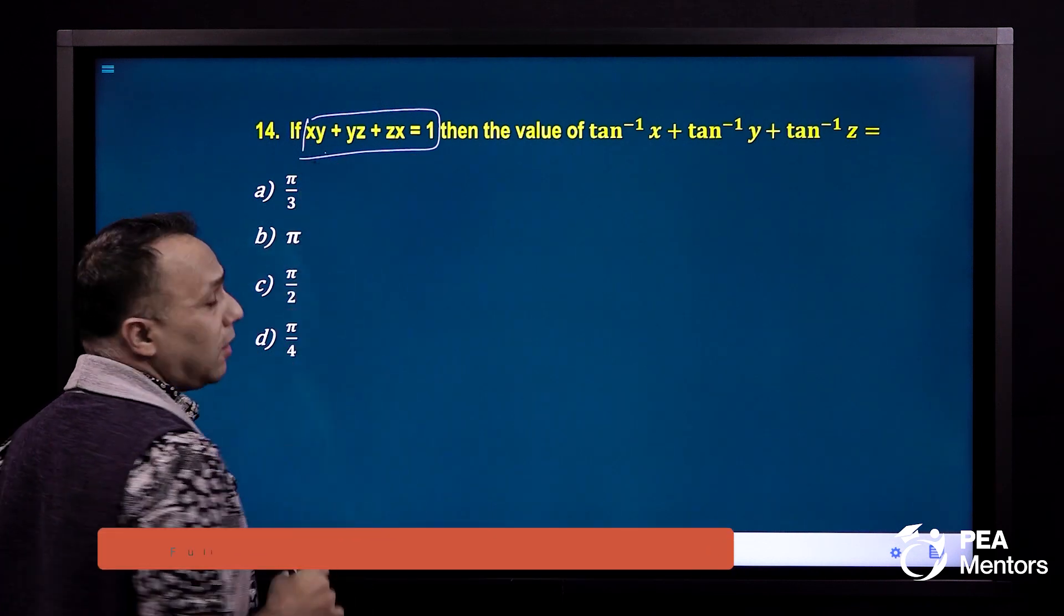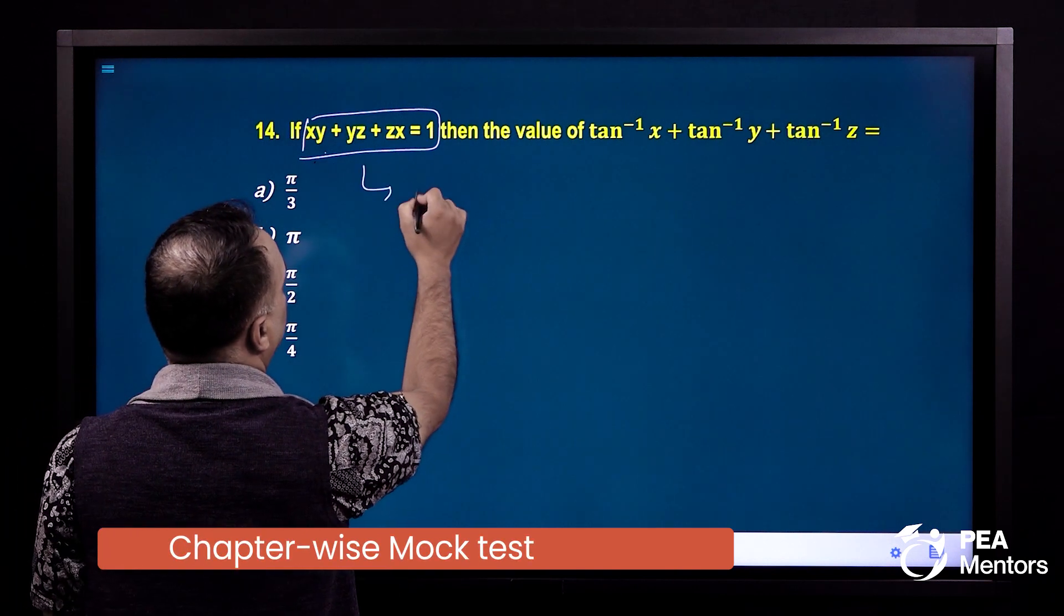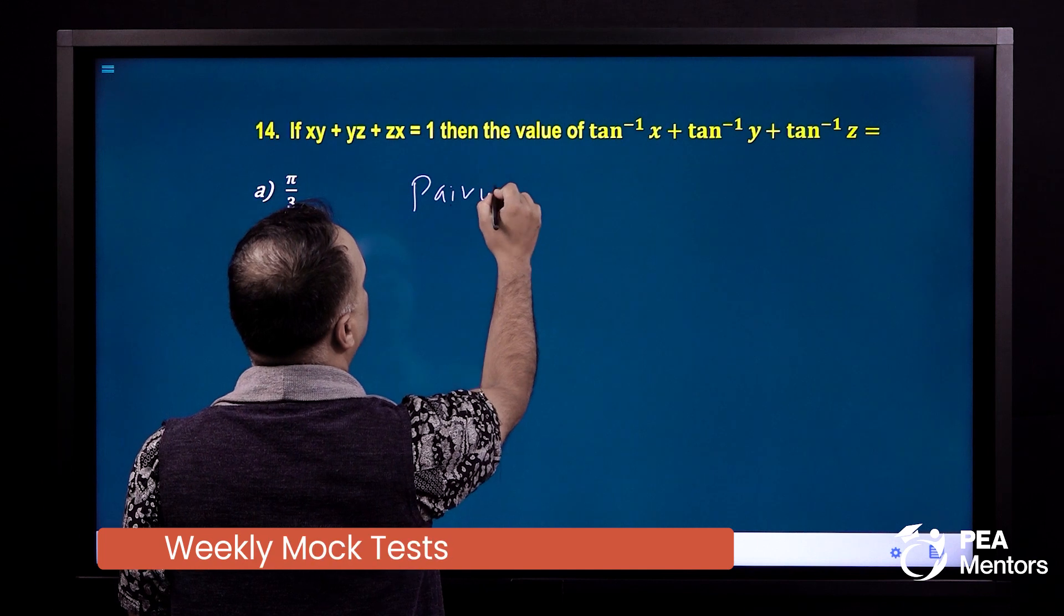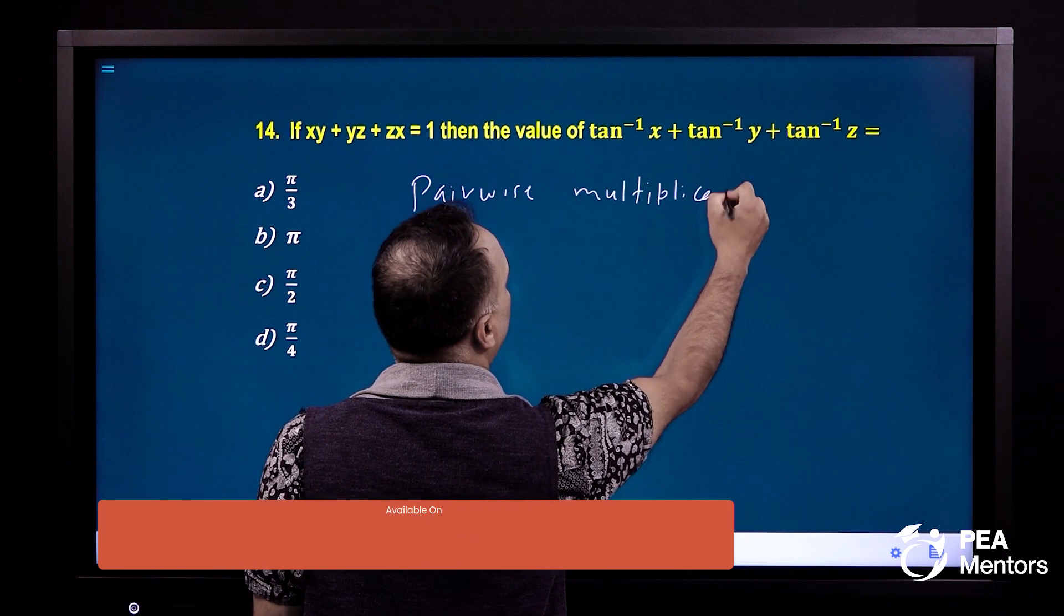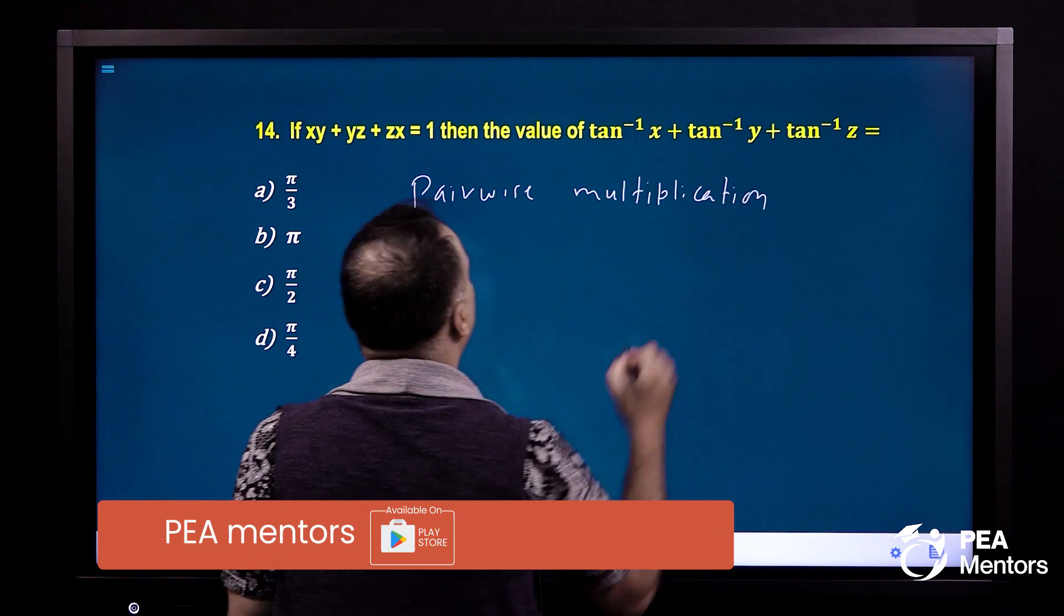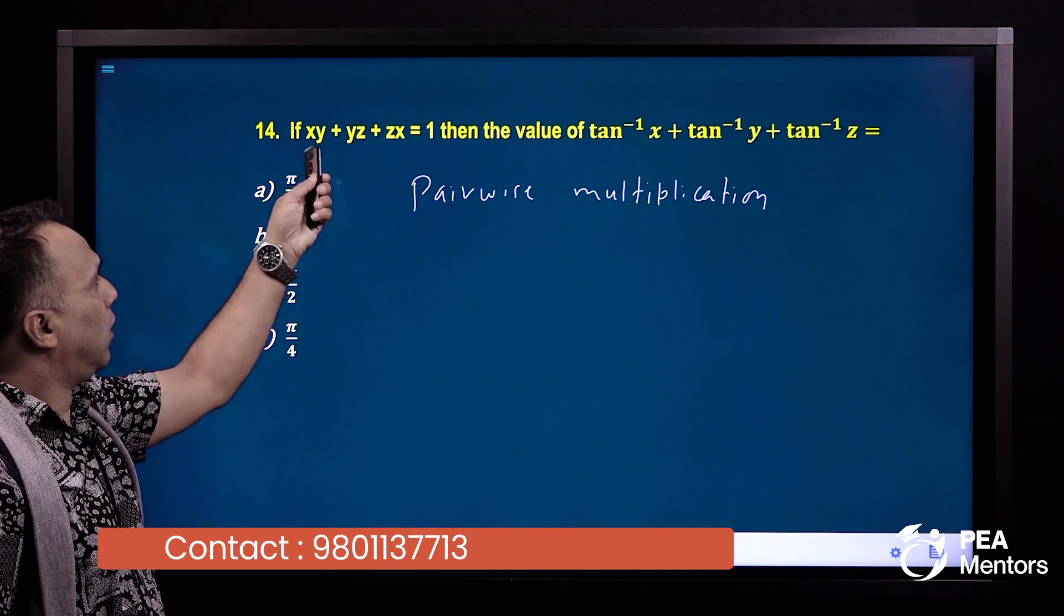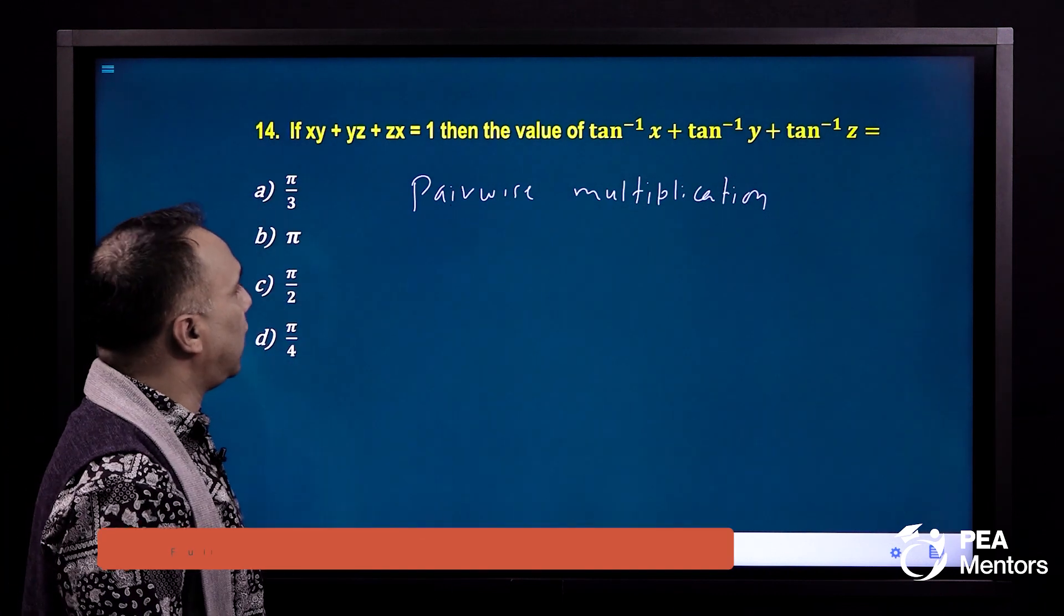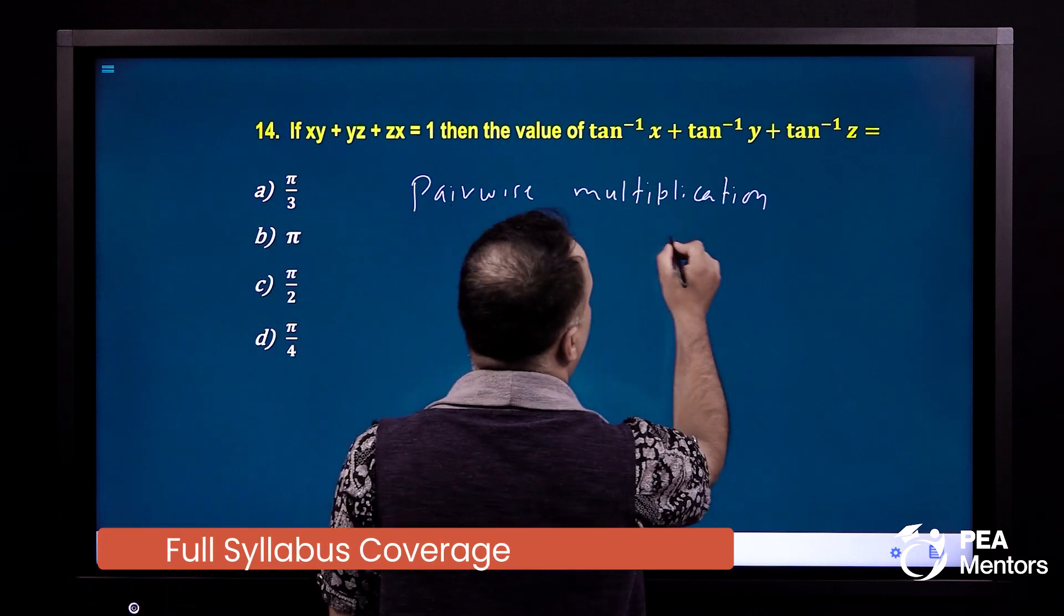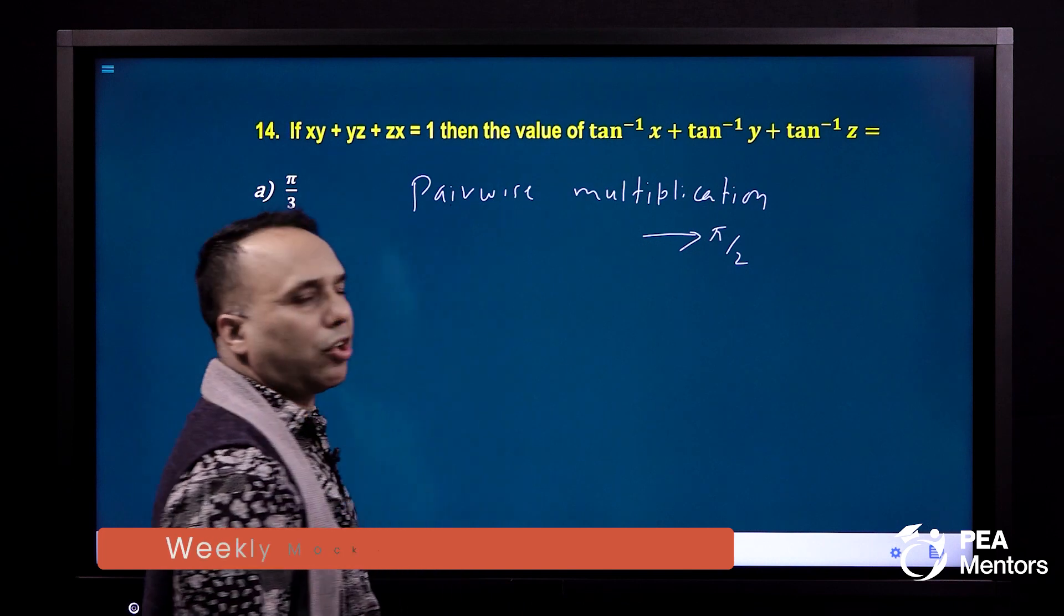x into y plus y into z plus z into x - pairwise multiplication. If pairwise equals 1, the answer is pi by 2. This is the objective approach.